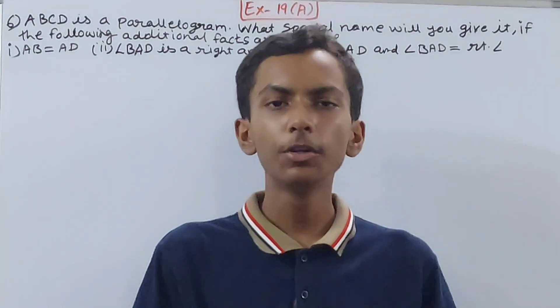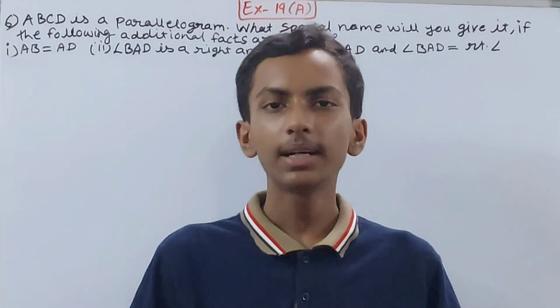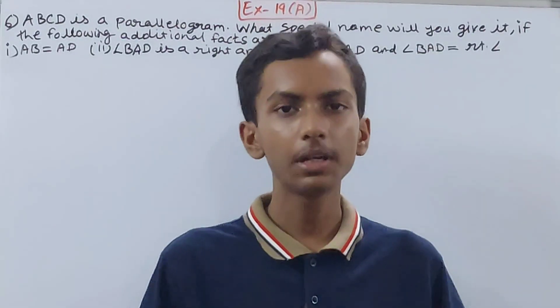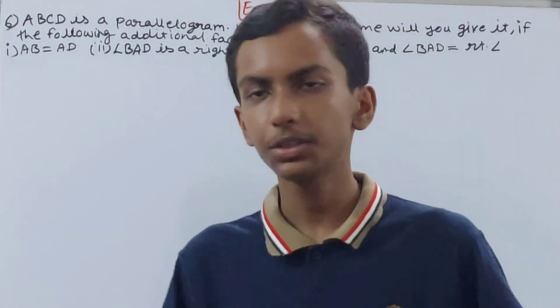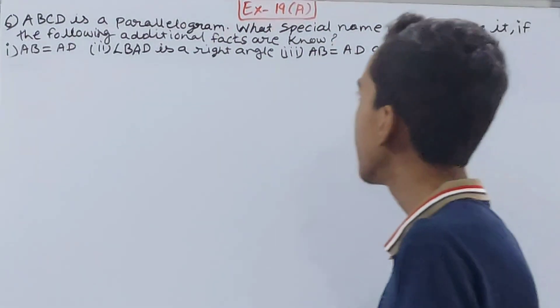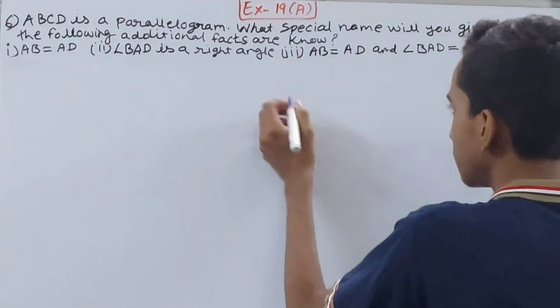Hello friends, welcome back to my YouTube channel Unlock Your Learning. In this video we are going to solve ICC Mathematics Class 8, Chapter 19, Special Types of Quadrilaterals, Exercise 19, Question 6. ABCD is a parallelogram. What special name will you give if the following additional facts are known?